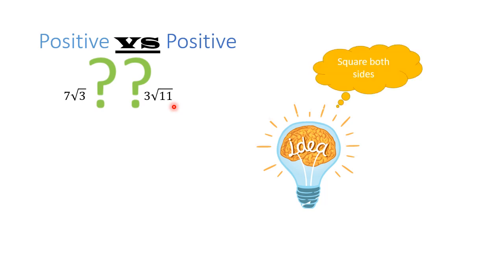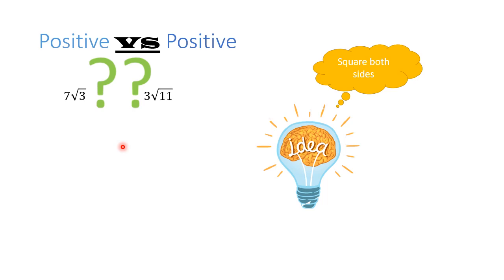The idea is that we should square both sides — and remember, both sides — because whenever we square both sides, the bigger will remain bigger. If you square only one side, you are increasing the value of that side without doing anything to the other. Square both sides and the bigger stays bigger, the smaller stays smaller — we just get rid of the radical.